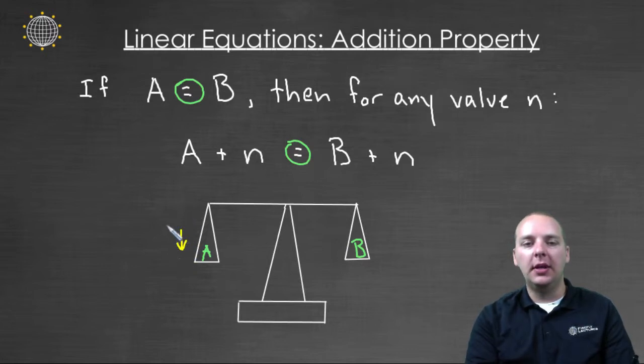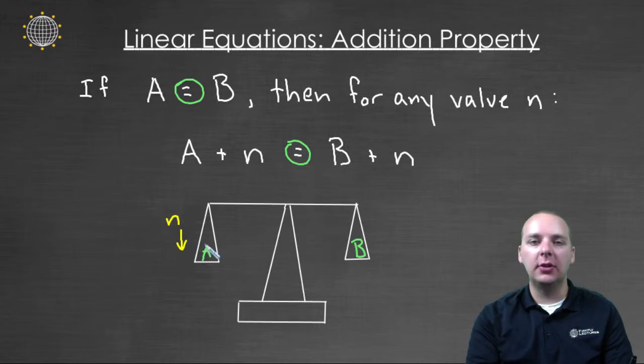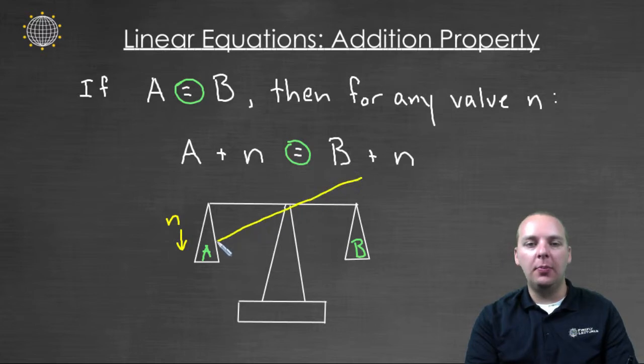So if we put an extra, you know, N pennies, or terms, or whatever N is representing, if we add extra to the left hand side, but do not add any to the right hand side, the scale will tip, and it won't be equal anymore. The left side won't in fact equal the right side.